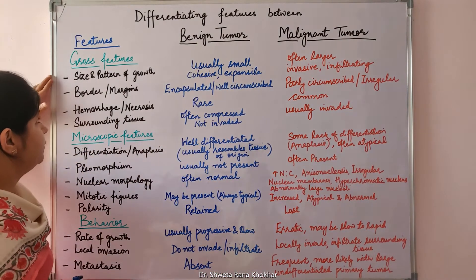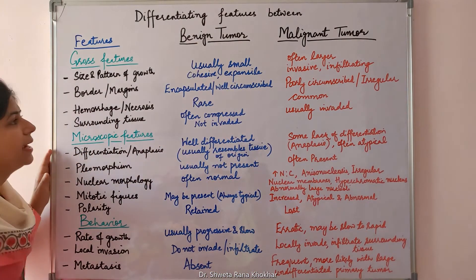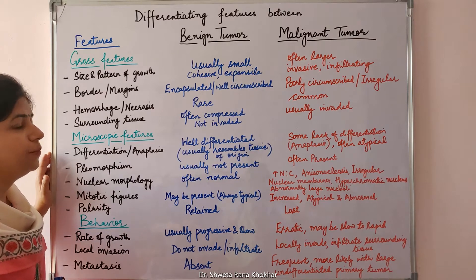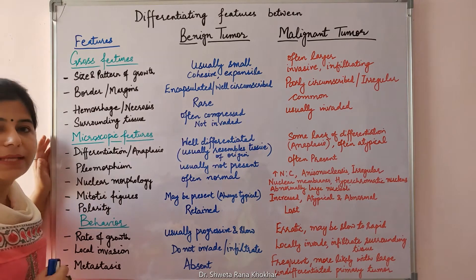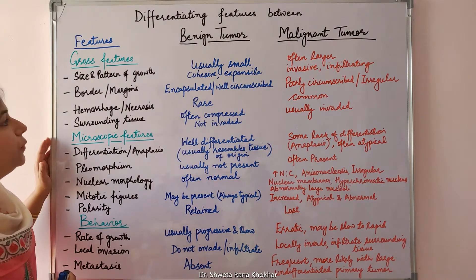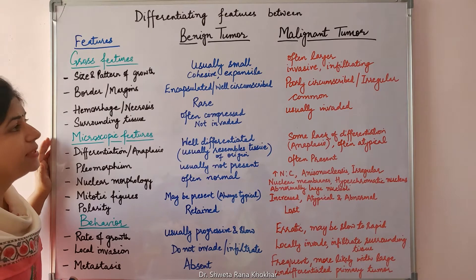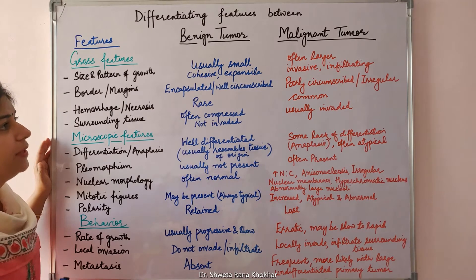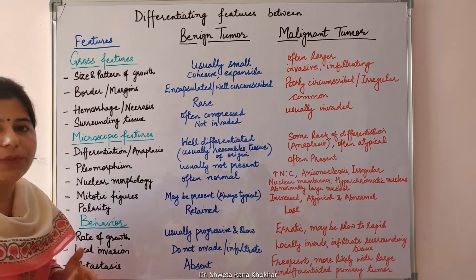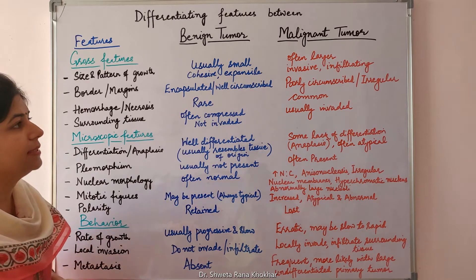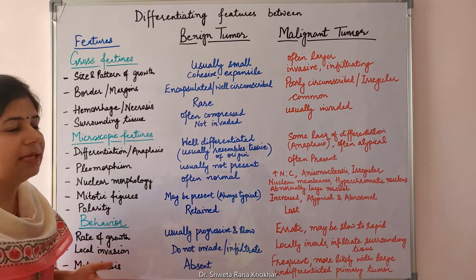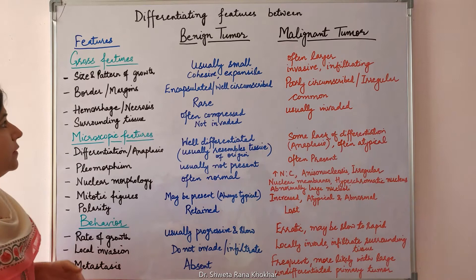The gross features: size and pattern of growth. In benign tumors, the size of the tumor is usually small and the growth is cohesive and expansile. Whereas in malignant tumors, the tumor is often larger in size and they grow as invasive infiltrating tumors.